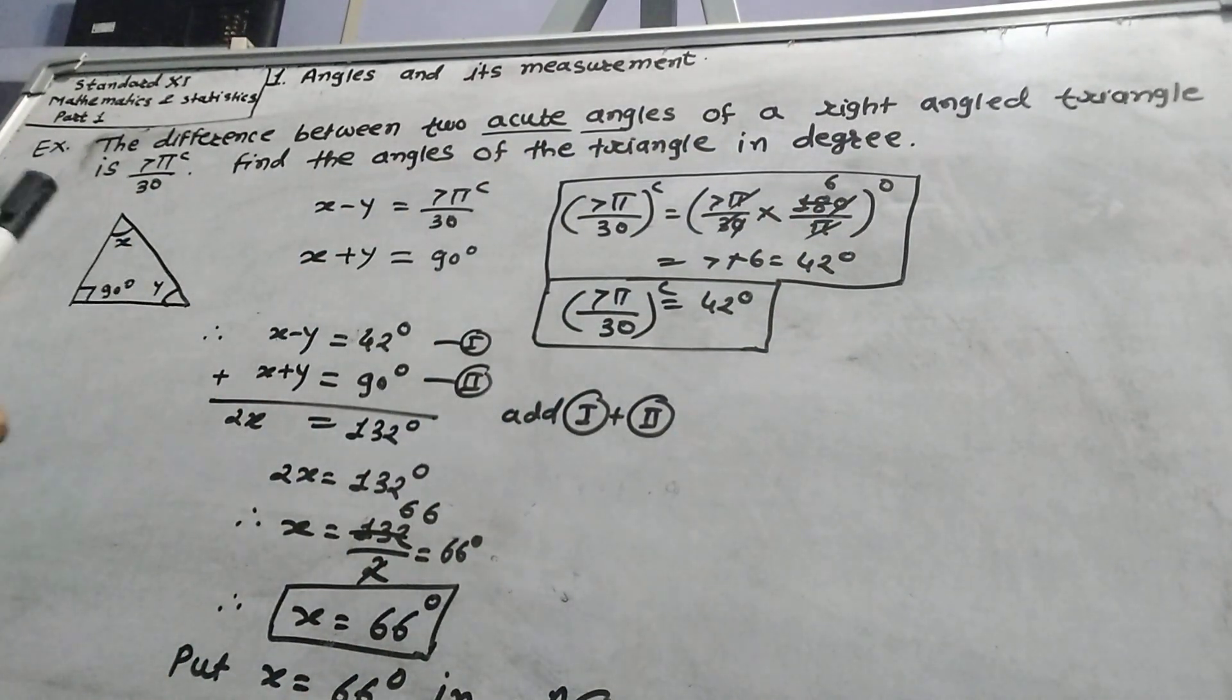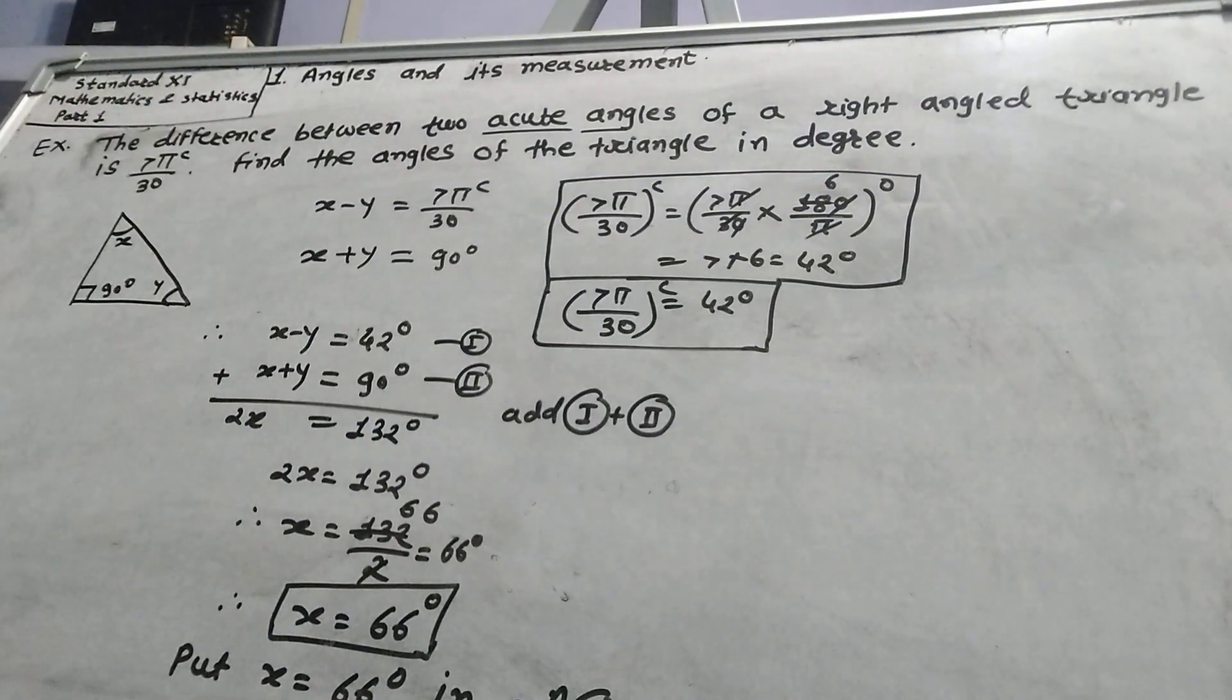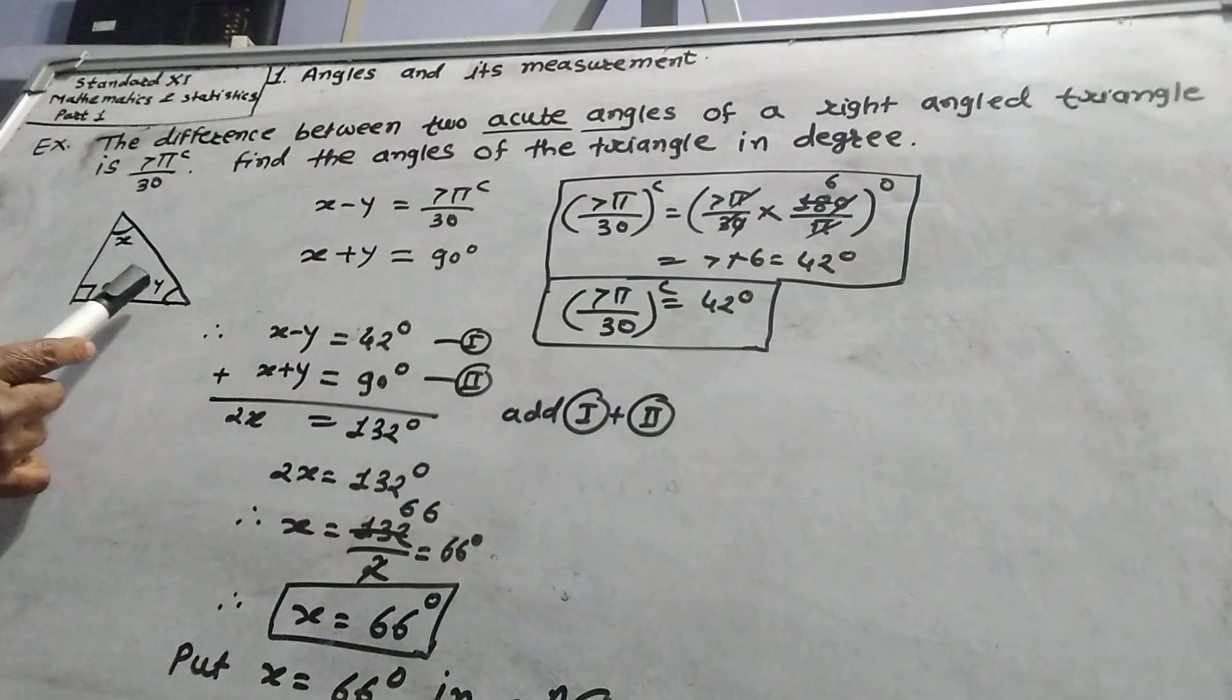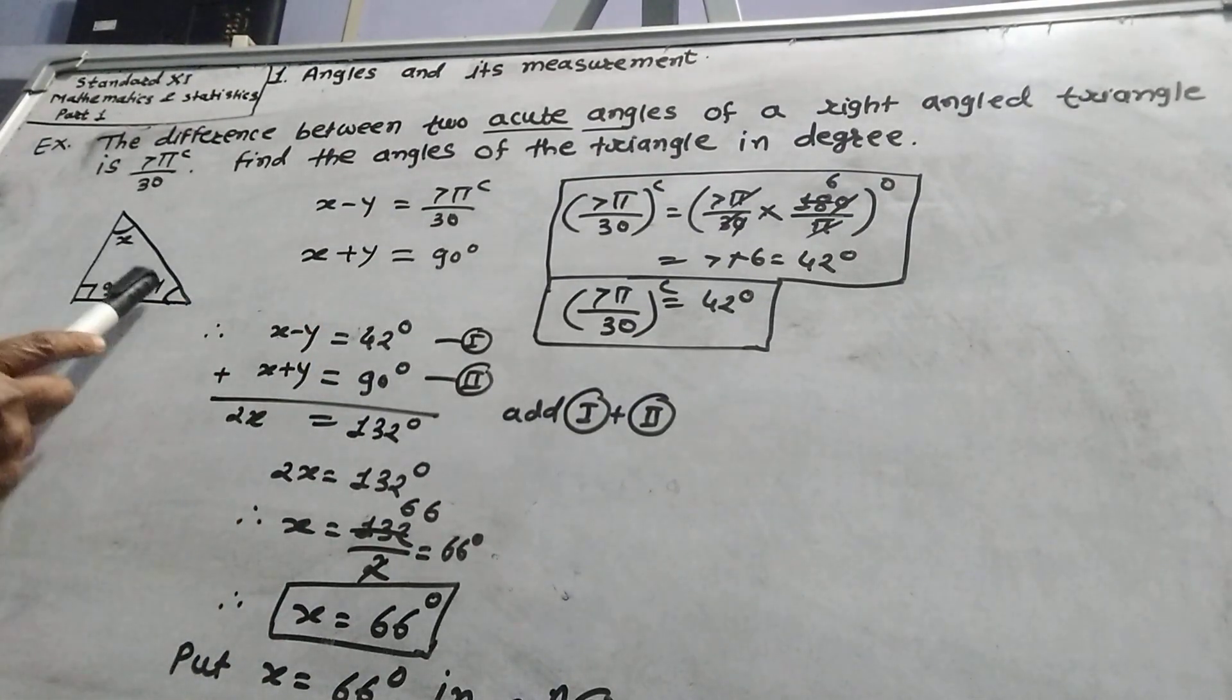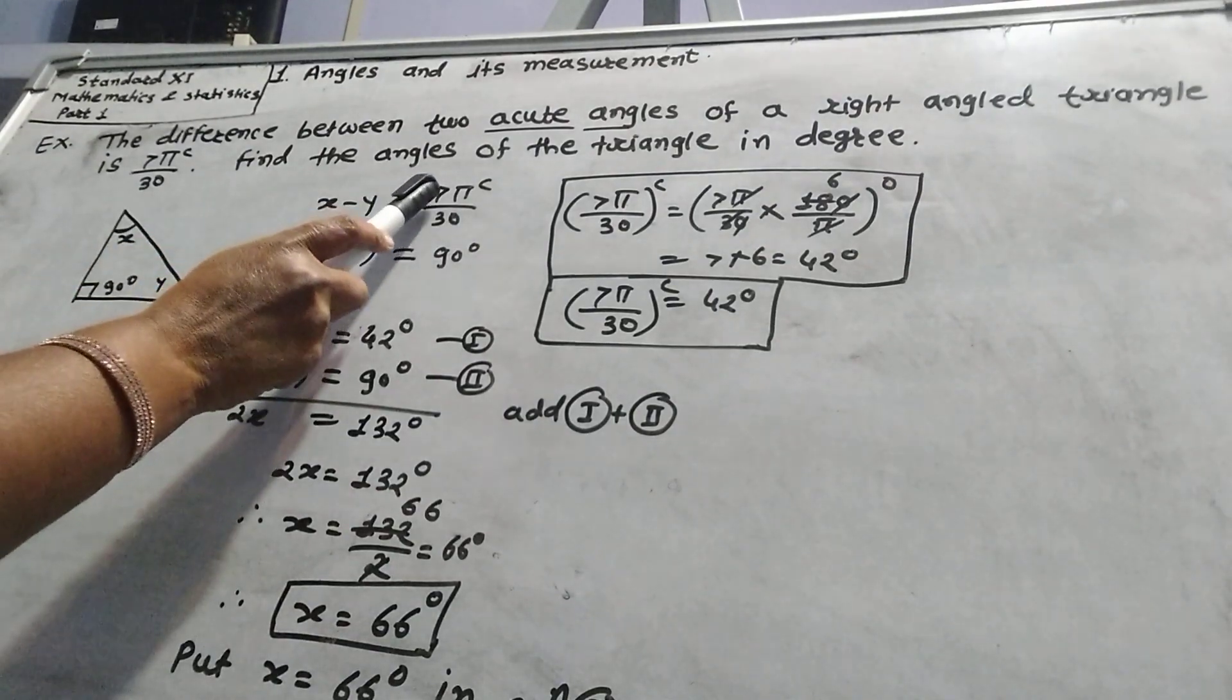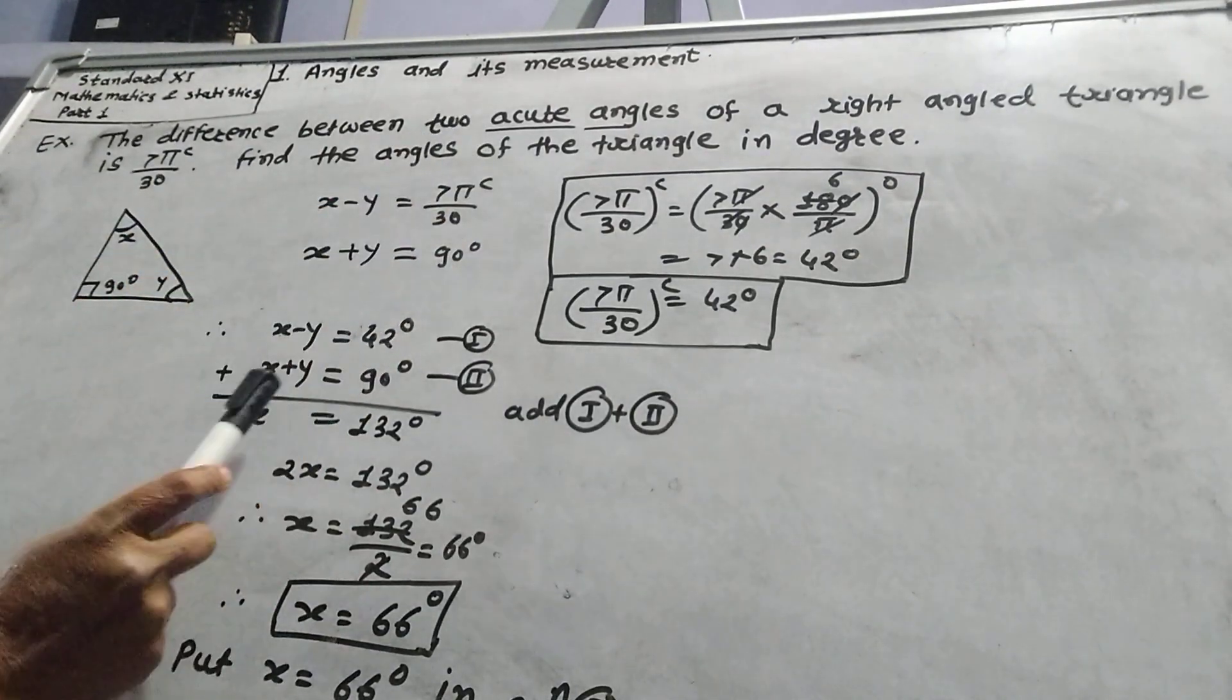This is a right angle triangle. Therefore, one angle is 90 degrees and the sum of the remaining angles is equal to 90 degrees. So x plus y equals 90 degrees, and their difference is 7π/30 radian.